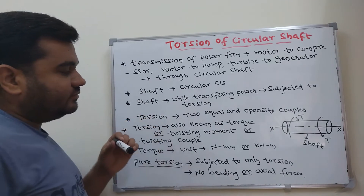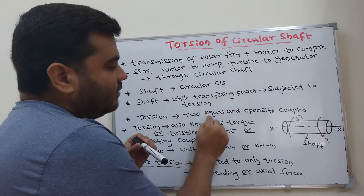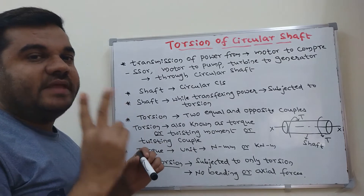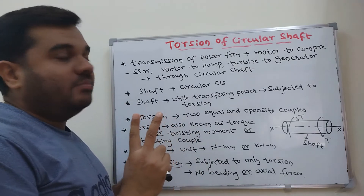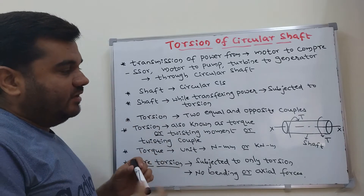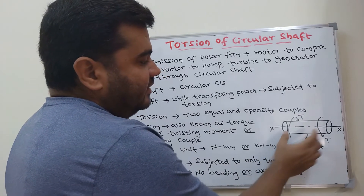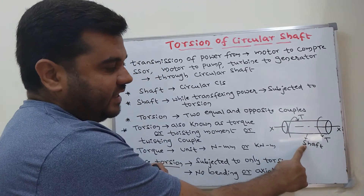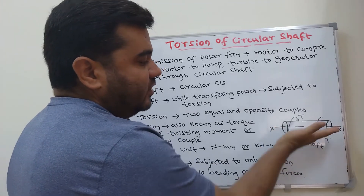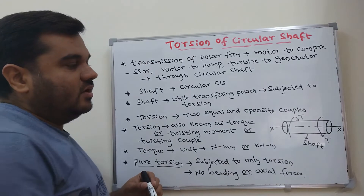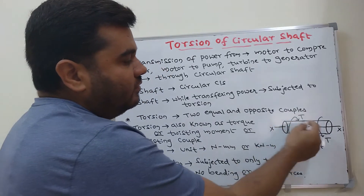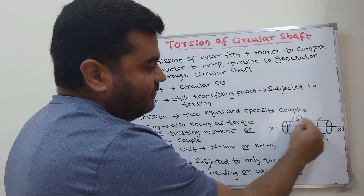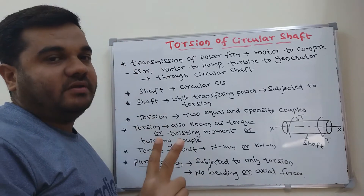The next point: torsion is two equal and opposite couples. You need two forces whose magnitudes are equal but whose directions are opposite. Here, referring to the figure, this is a solid circular shaft with longitudinal axis XX. If the shaft is subjected to two equal and opposite forces — a couple at each end — both together form a couple.